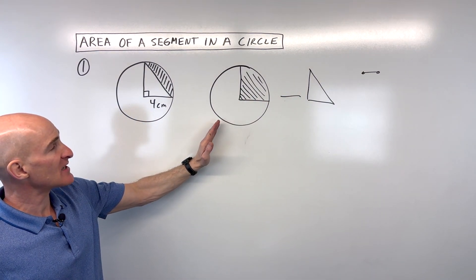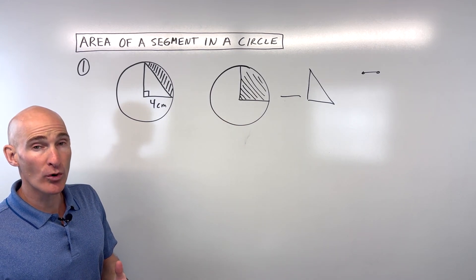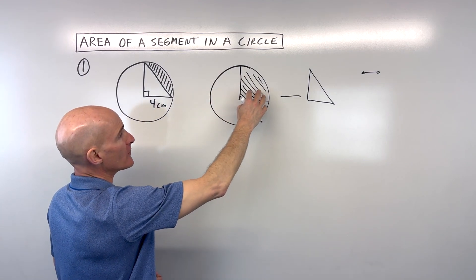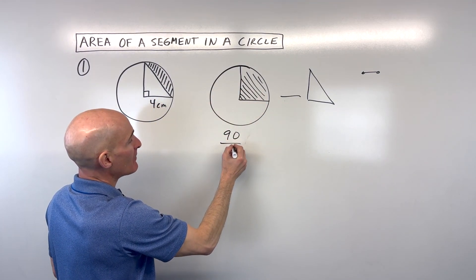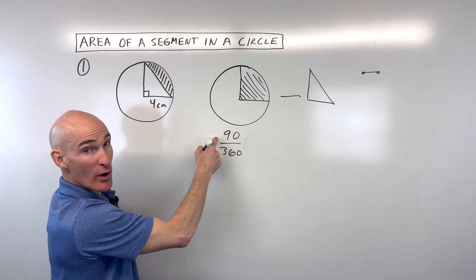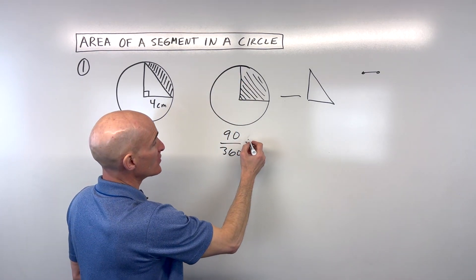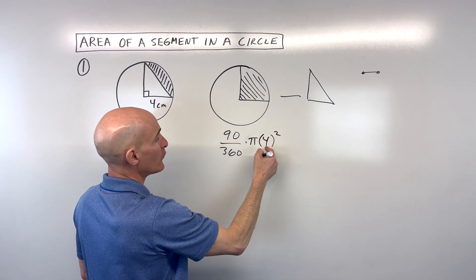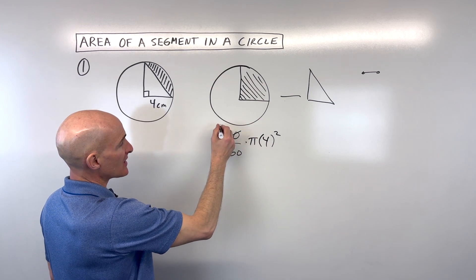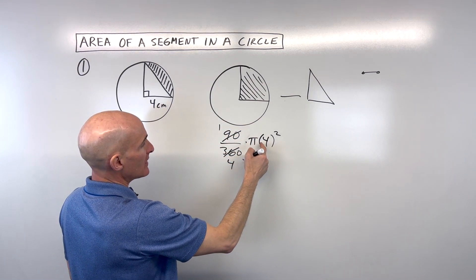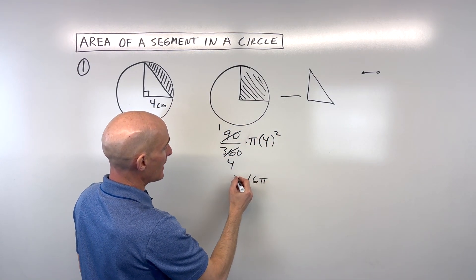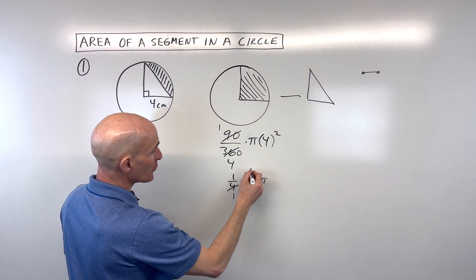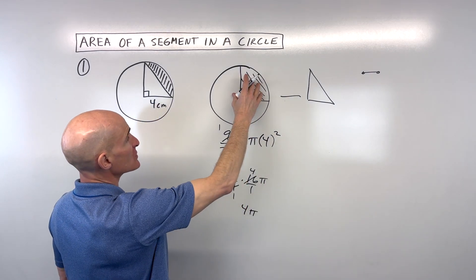When we find the area of the sector, there are a couple of different ways to do it. One is to use a proportion; the other is to focus on the fraction of the whole area. So in this case, we say 90 divided by 360, which is one fourth of the area of the whole circle — pi r squared. Here it's pi times 4 squared. Four squared is 16, so we have 16 pi times one fourth. Reducing, four goes into four once and into 16 four times, so this sector area is 4 pi.